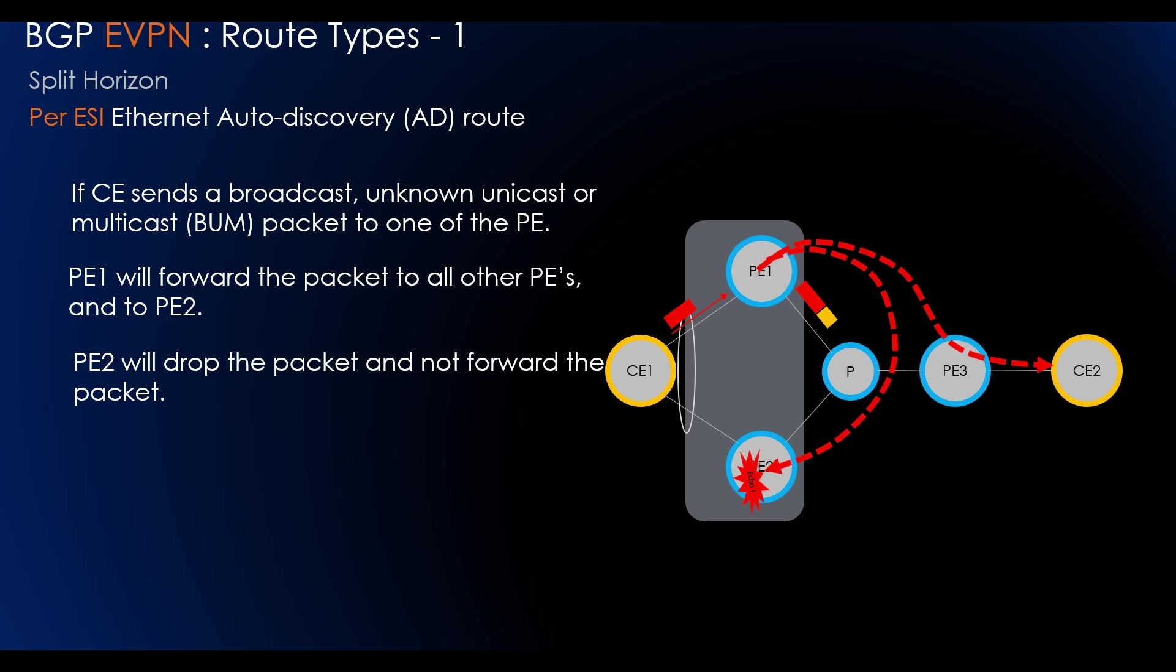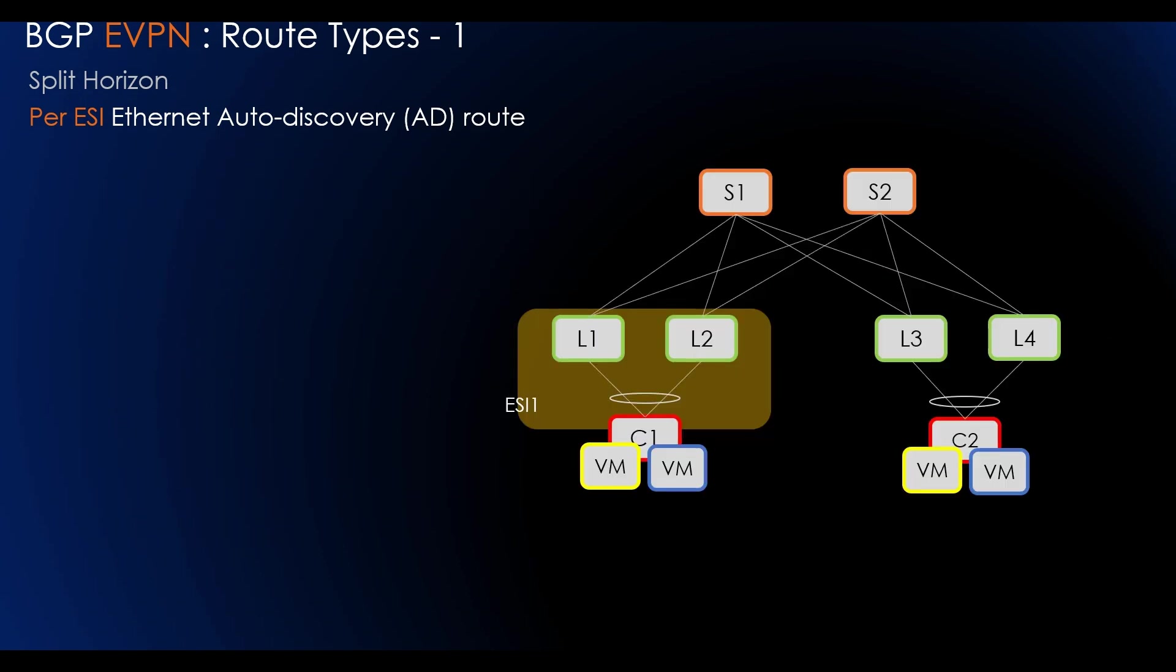In case of service provider domain, to achieve this, every BUM packet originating from a non-DF PE is encapsulated with an MPLS label that identifies the Ethernet segment of origin. This label is referred to as ESI label and is advertised to all the PEs when operating in all-active redundancy. VXLAN encapsulation does not include the ESI label.